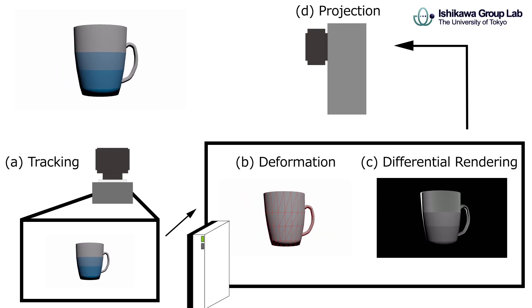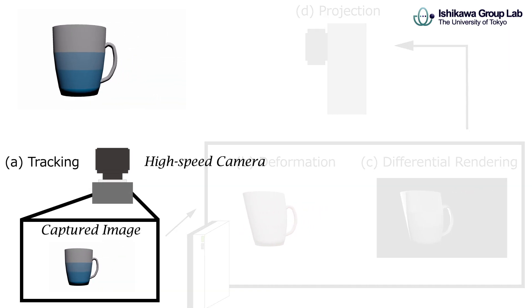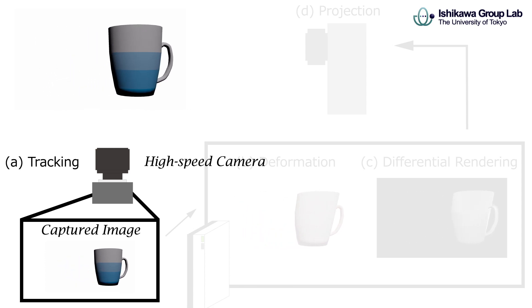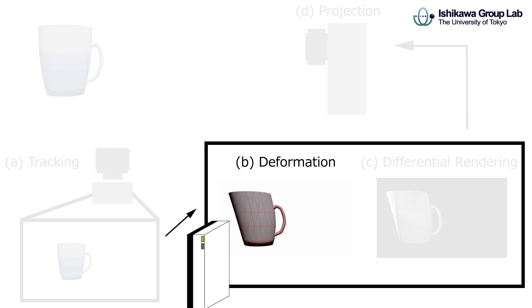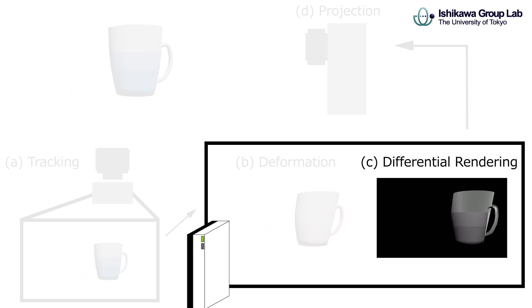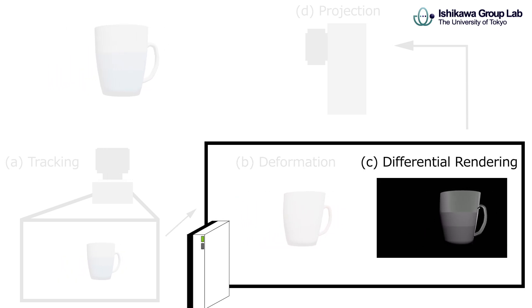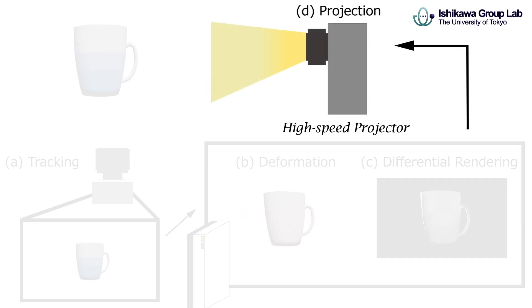This is the system flow of Elimorph projection. First, we track the position and rotation of the target in 6DOF by the high-speed camera. Next, the deformed geometry of the target is calculated on the computer using the tracked information. Then, the differential image between the rigid shape and virtual shape is rendered to produce virtual motion and human perception. Finally, the high-speed projector projects the rendered image onto the target.